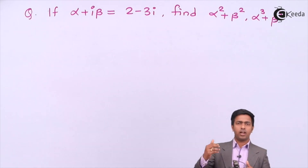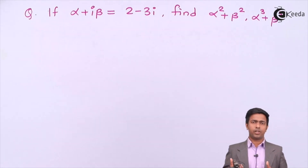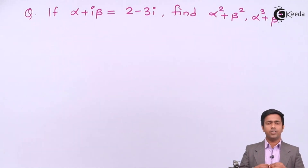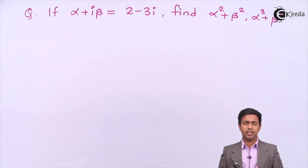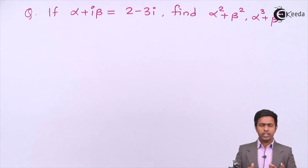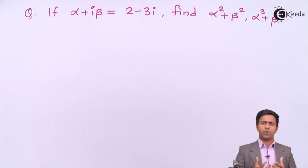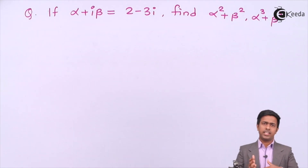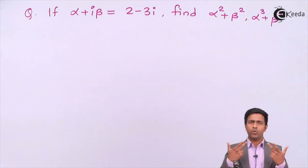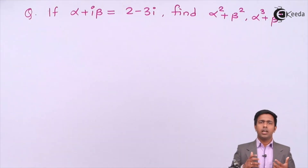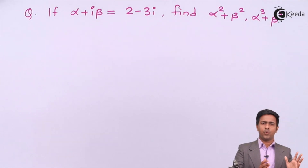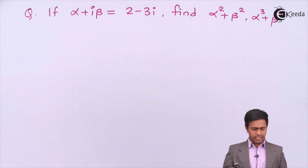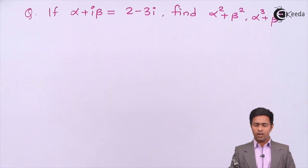To get the values of alpha squared plus beta squared and alpha cubed plus beta cubed, we must know the values of alpha and beta. For that, we are going to use the concept of equality of complex numbers. As we have seen in the previous video, two complex numbers are equal if their real parts are equal and their imaginary parts are equal.